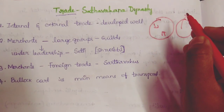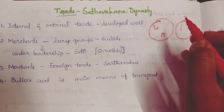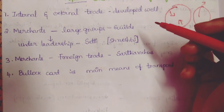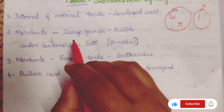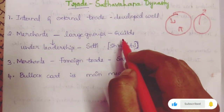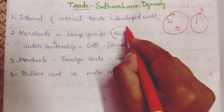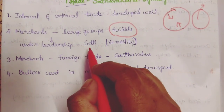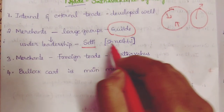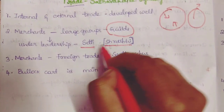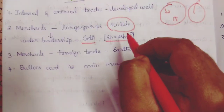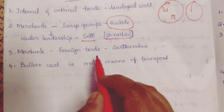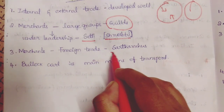As mentioned earlier, trade is nothing but exporting and importing goods and services. During the Satavahana period, all the merchants formed into large groups known as guilds. Those guilds were associated under the leadership of Setti, who is also known as Shresti. The merchants who did trade with foreigners are known as Sadavahus.